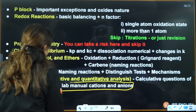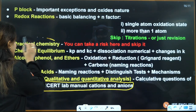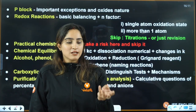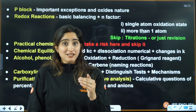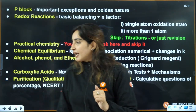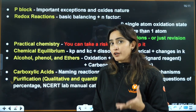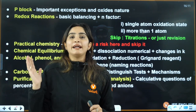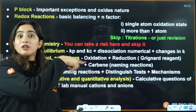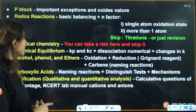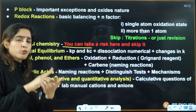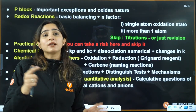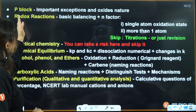Practical chemistry relates to NCERT lab manual — cations and anions. You should know how cations are identified, all the important tests. Some tests also appear in purification, qualitative, and quantitative analysis. However, practical chemistry — specifically cation groups one, two, and three — is your least priority. Focus on high priority first; only come to this in the end if you have time, as it involves a lot of memorization.